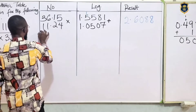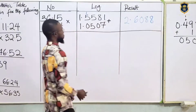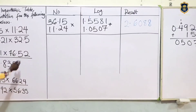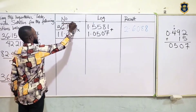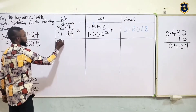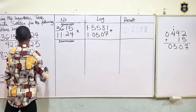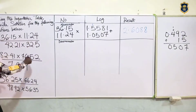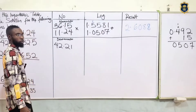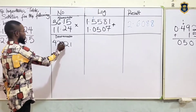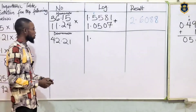Now let's cover this off. That's for the numerator. Now let's look at the denominator. With the denominator we have 42.21. We move this one place, so the characteristics is 1. Check your logarithms table — log of 42 under 2.